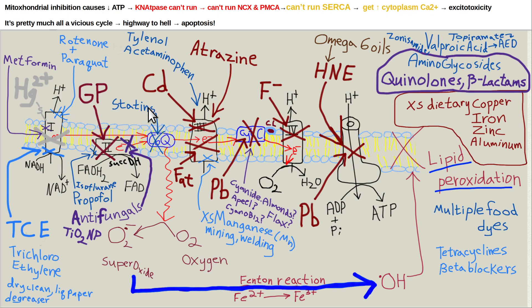The typical person takes statins to lower their cholesterol. Statins inhibit coenzyme Q electron transport. I can just picture someone eating non-organic food, taking a statin and their metformin — all of this stuff inhibiting their mitochondria. I'm going to bet that's going to increase their risk of diabetes and cancer. And it won't make them smarter either, having less energy for their brain.